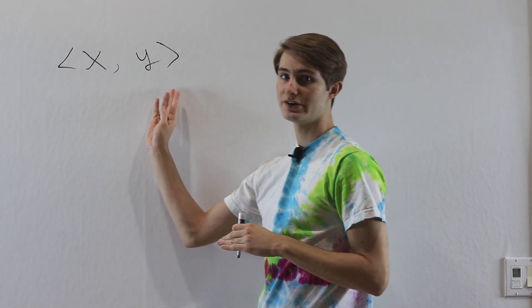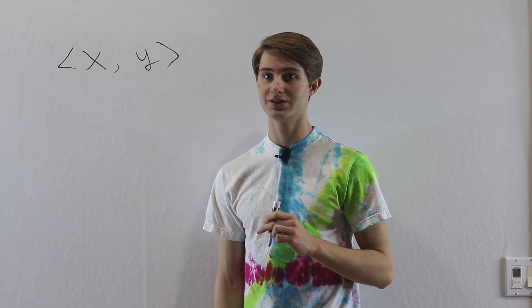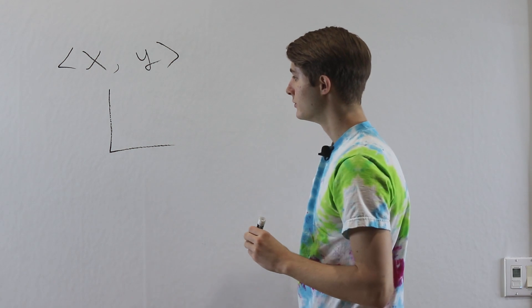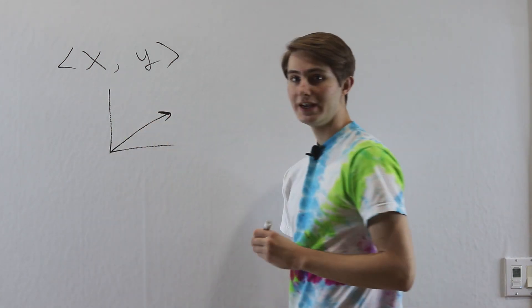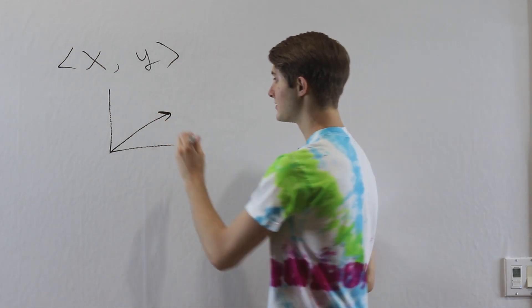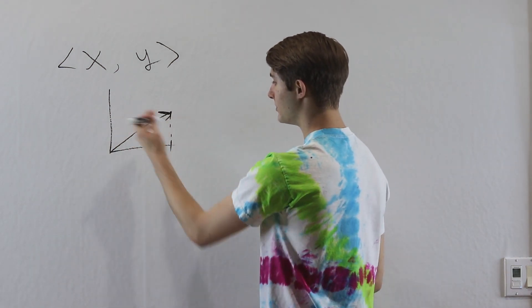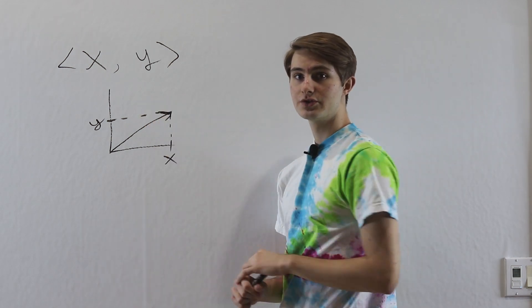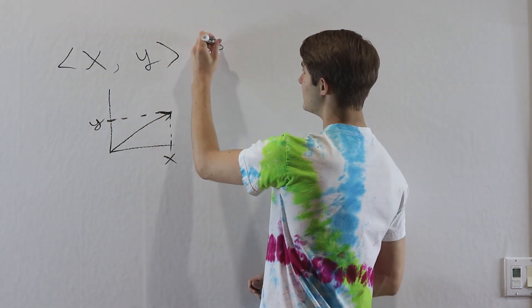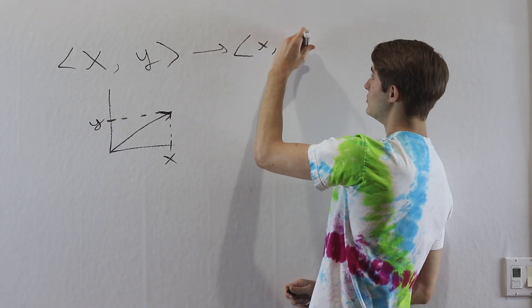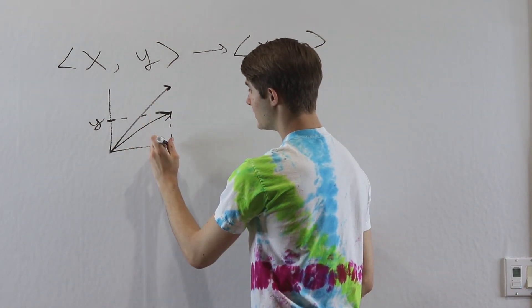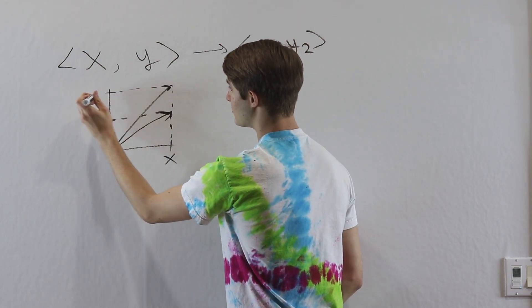A lot of times when we have vectors, we like to represent them spatially. We have a horizontal axis and a vertical axis, and we might think about the vector ⟨x, y⟩ as an arrow pointing from the origin to a particular point in space — the horizontal component is x and the vertical component is y. Notice that we can change either component without worrying about the other. So we can make a different vector with the same x but a changed y, and our new vector looks different while keeping the exact same x component.